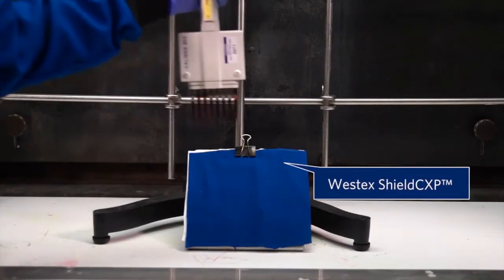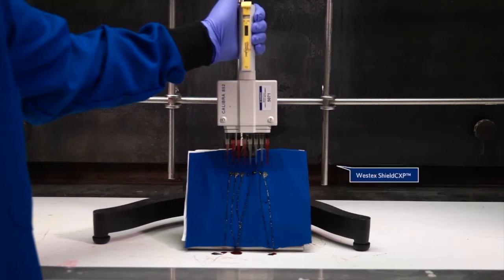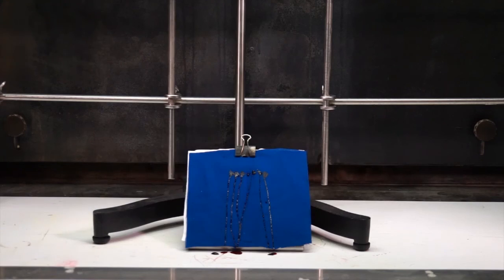When you do the same experiment using the Westex Shield CXP fabric, you see that all the solvent is repelled. It is resisted from the surface.